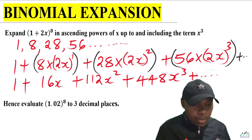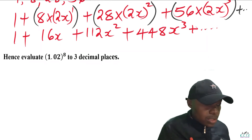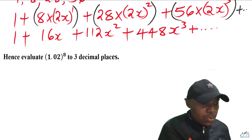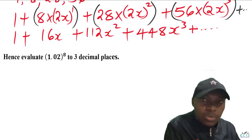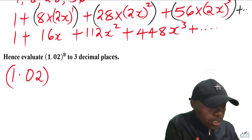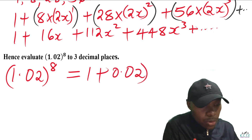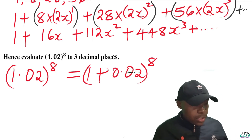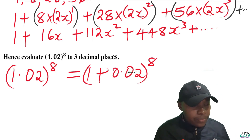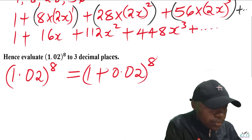That's the first part. The second part requires us to evaluate 1.02 raised to power 8. The first thing is to split 1.02 raised to power 8 into two terms: 1.02 raised to power 8 is the same as (1 + 0.02) raised to power 8. Since we need to use the expansion obtained in the first part, we equate this to (1 + 2x) raised to power 8.